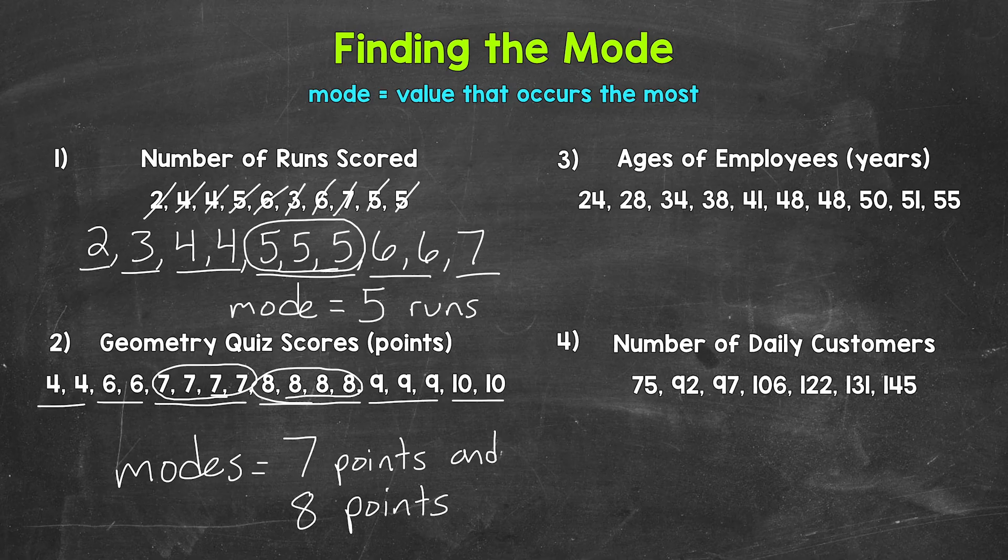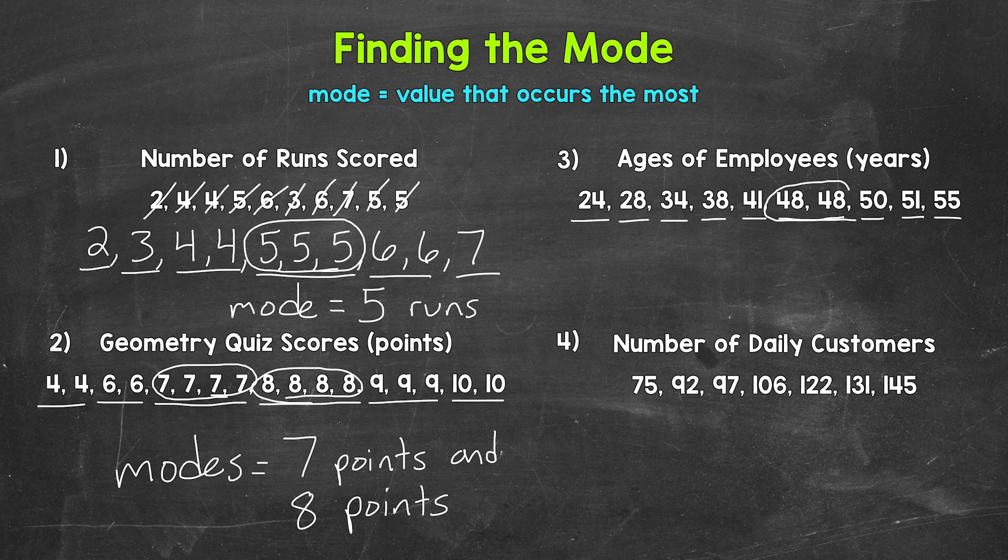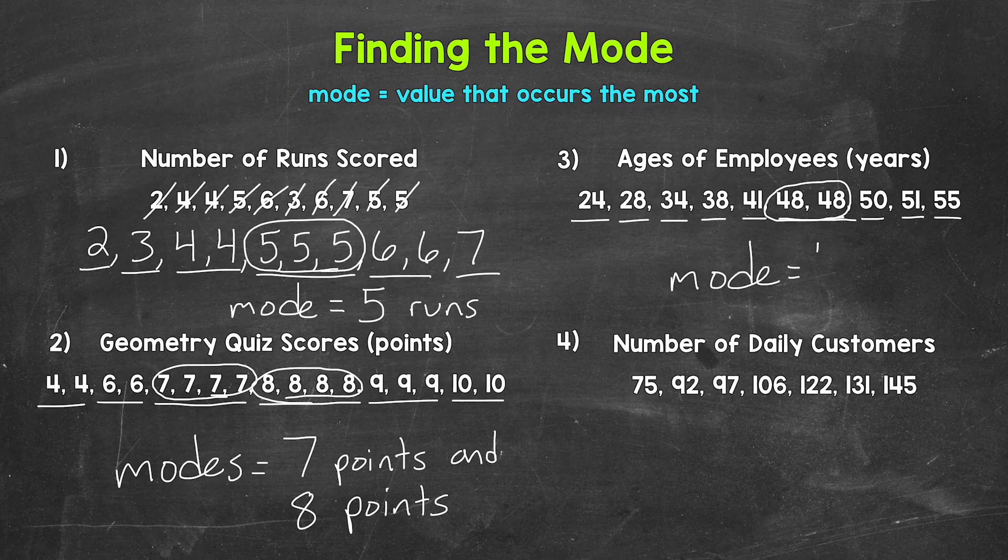Let's move on to number 3, where we have the ages of employees at a business. Let's find the mode. 24 occurred once, 28 once, 34 once, 38 once, 41 once, 48 twice, 50 once, 51 once, and 55 once. So 48 years old occurred twice, which was the most. So that is our mode.